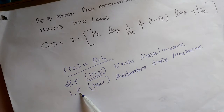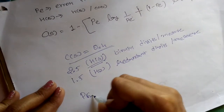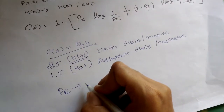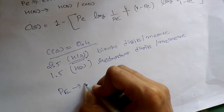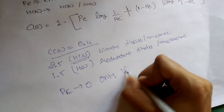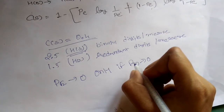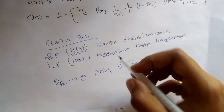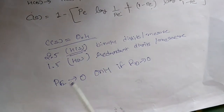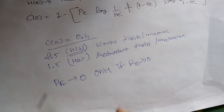For redundancy: Pe approaches approximately zero only if Rb approaches zero. Here, signal power is infinite and Rb is almost zero. This represents the limiting condition described in Shannon's theorem regarding the trade-off between error probability, signal power, and bit rate.